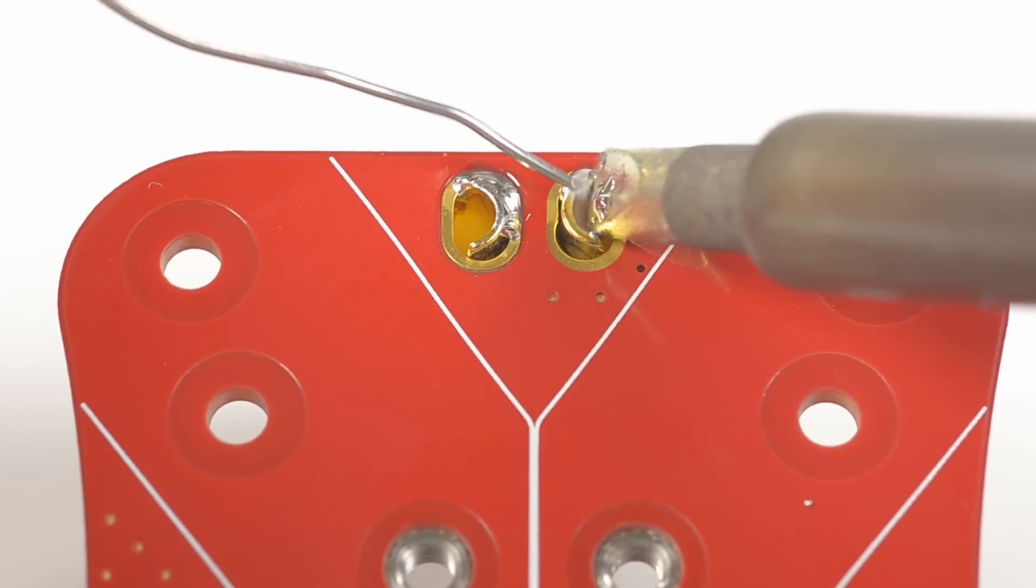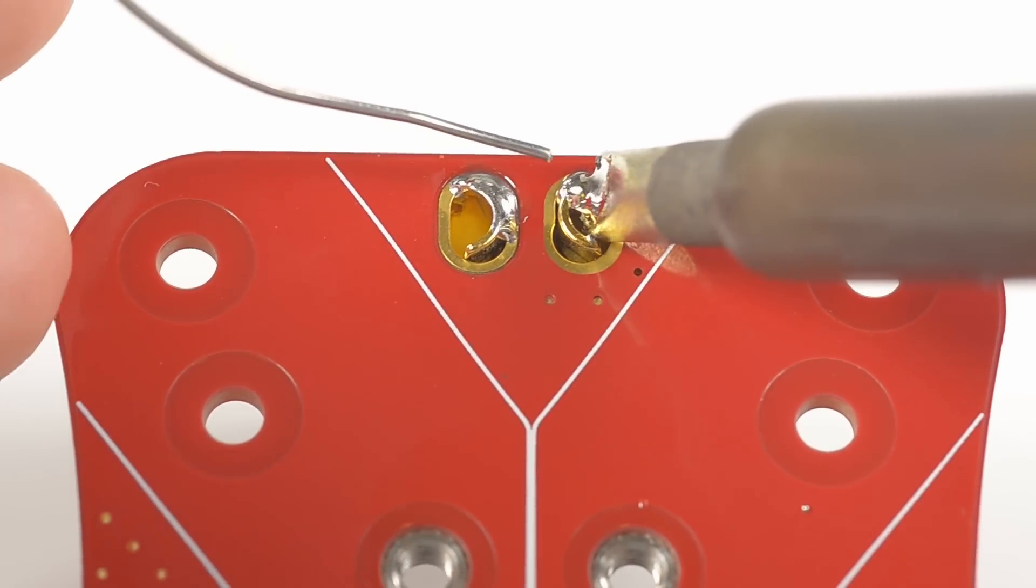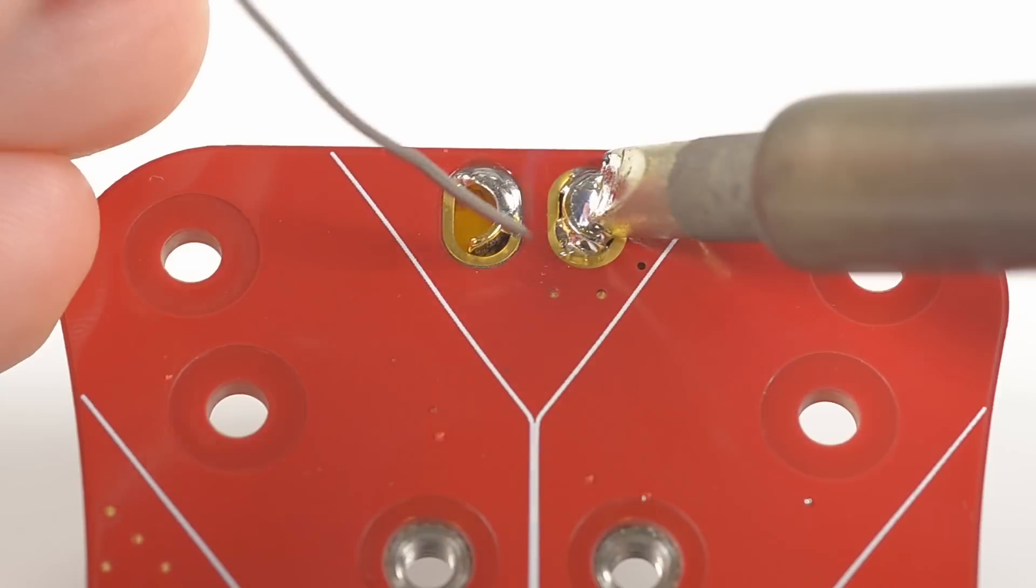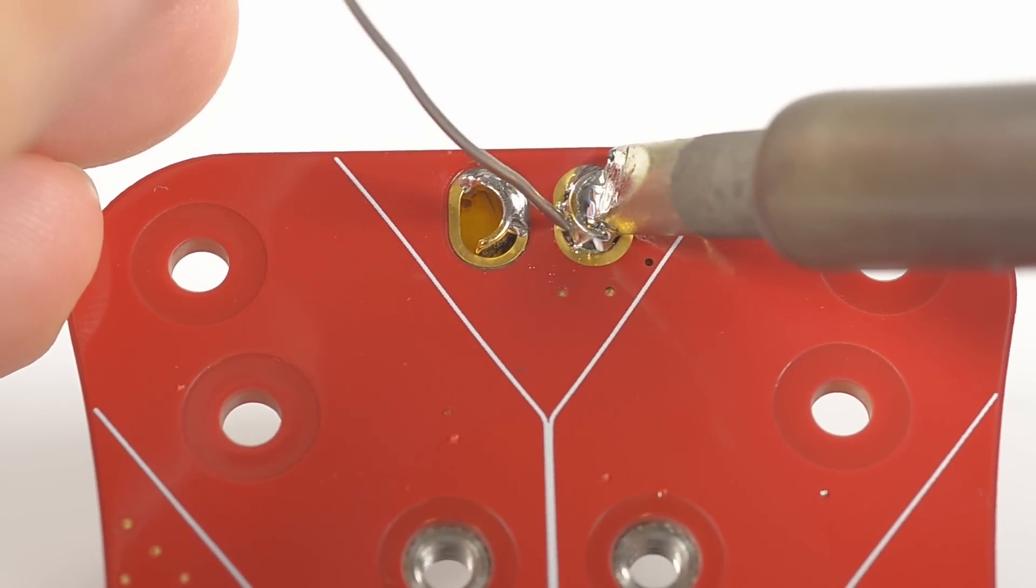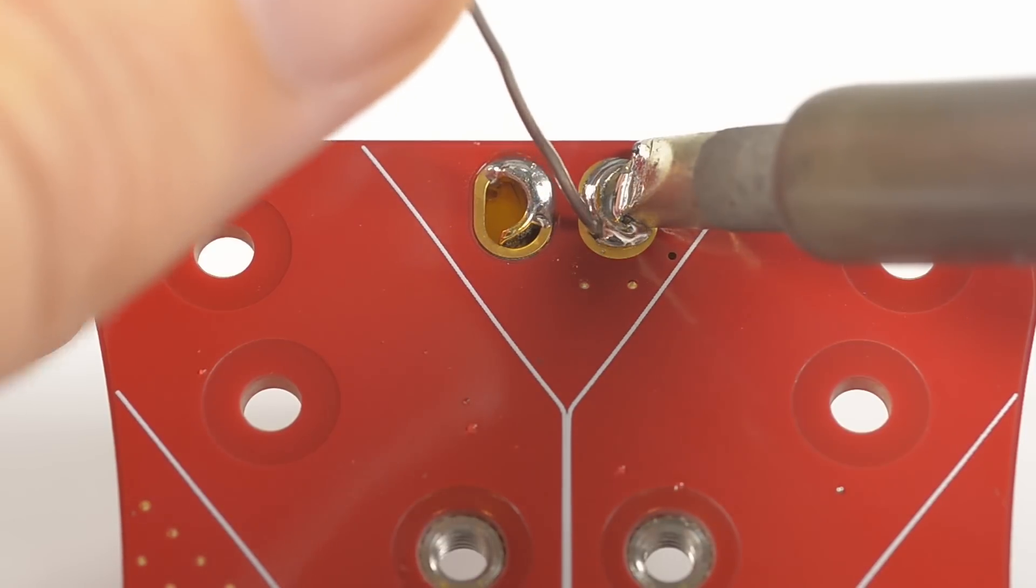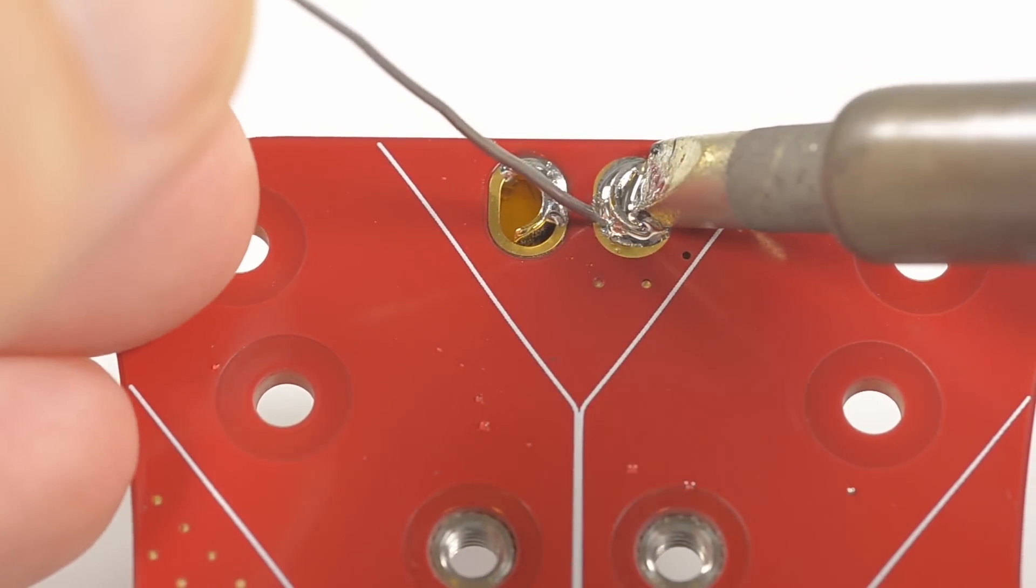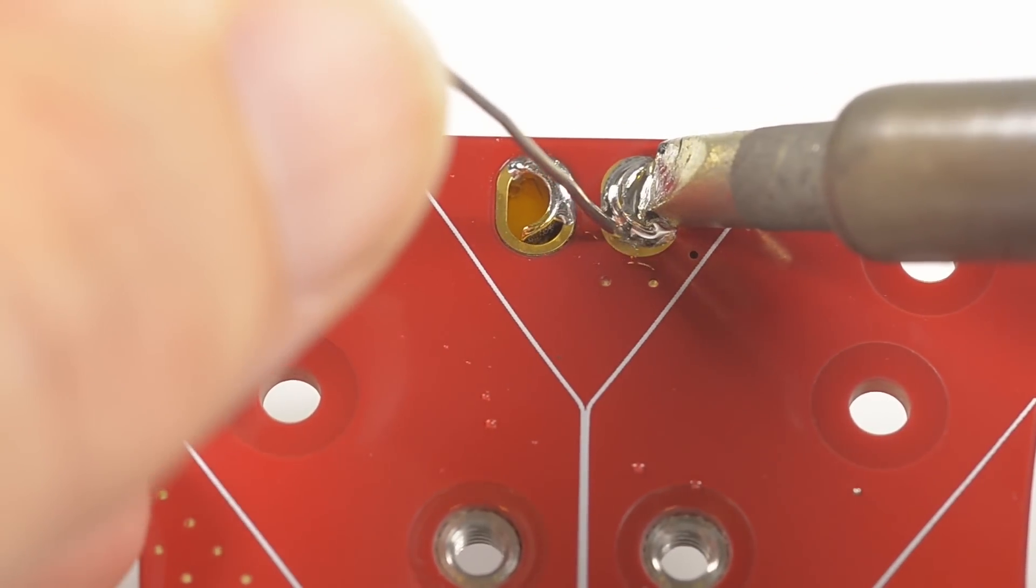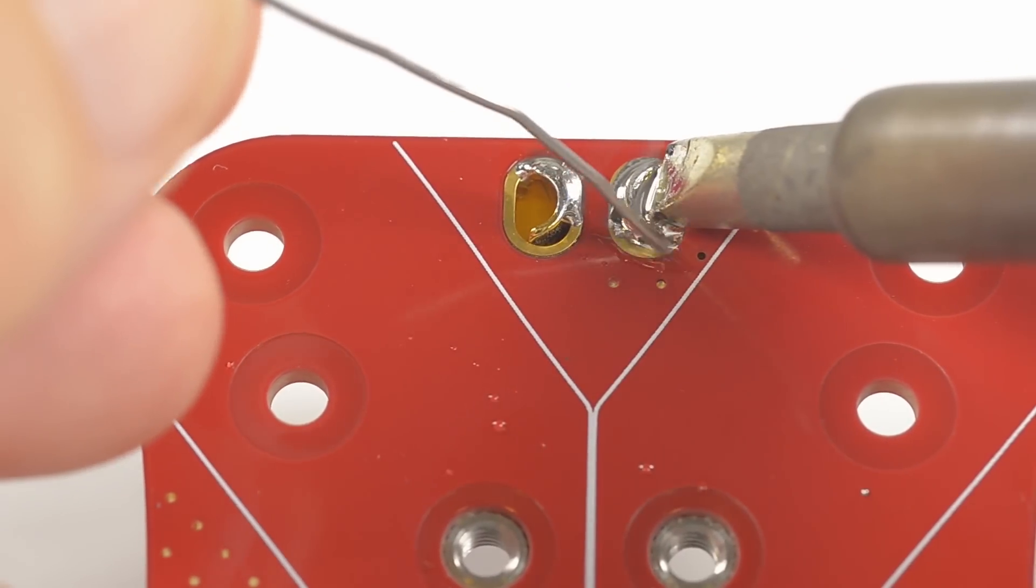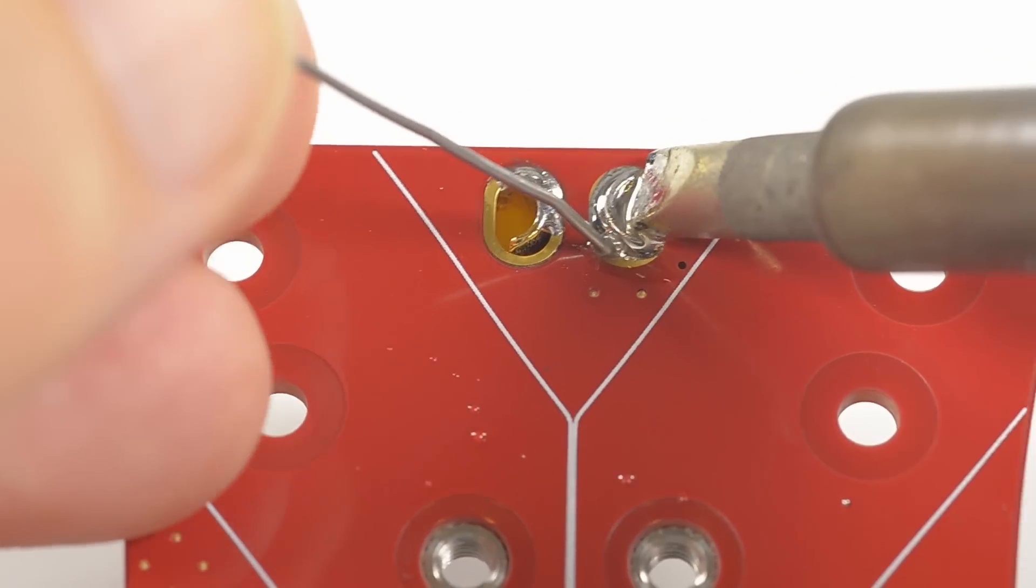Now properly heat each one, one by one, so that the heat flows into the PDB and also into the XT60. It'll take a lot of heat because the four ounce copper is wicking the heat away.